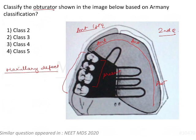Look at the image carefully whenever such a question is given, especially in Aramani classification for maxillary defects, Cantor-Curtis classification for mandibular defects, and Kennedy's classification for partial edentulous arches. Look at the teeth present and the missing ones clearly.